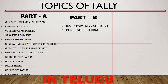Next are purchase returns. When I purchase something and it doesn't meet requirements, I will return it — these are purchase returns. Then sales returns: when a customer purchases from me and returns it to my shop, those are sales returns. After purchase and sales returns, the stock levels update accordingly.